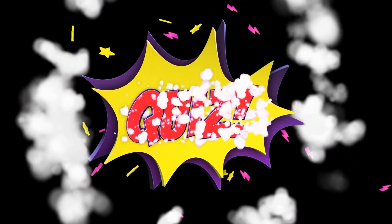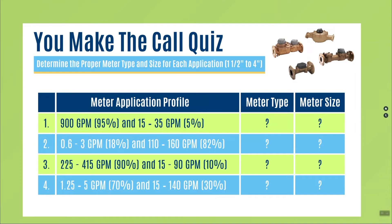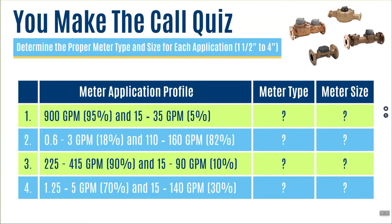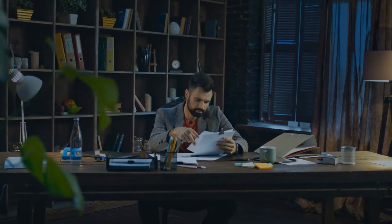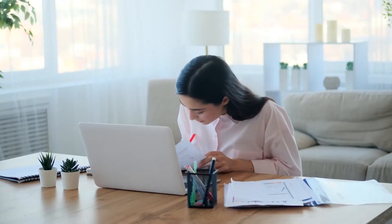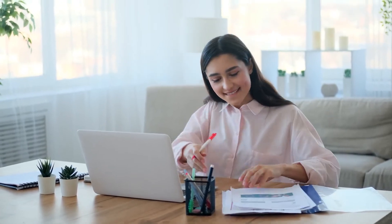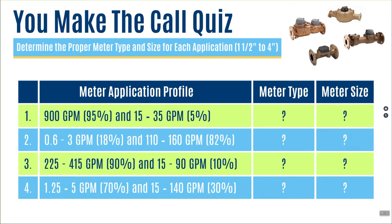So those are the seven steps you need to consider. The next thing we're going to do is a quiz with four different applications. These meters are constrained between an inch and a half and four inches — I just used applications that would fit an inch and a half to four inch meter. I'm going to go over the first one with you, and then you're going to print off those PDFs I've supplied, go through these applications, determine which meters are right, and our next lesson I'll review your answers.